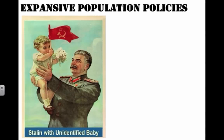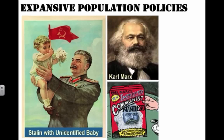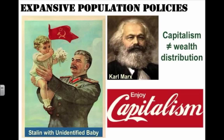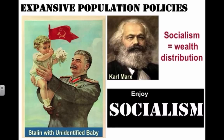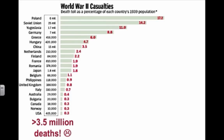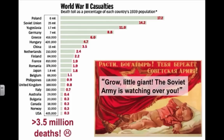Turning to expansive population policies, we must mention the Soviet Union, especially in the years following World War II. The Soviet Union followed closely the philosophies of Karl Marx, author of The Communist Manifesto and Das Kapital. Marx believed capitalism created unequal distribution of wealth and that there was enough food for everyone if the haves would share with the have-nots. Coupled with the reality of post-WWII Soviet Union — having lost more than 14% of their population, over 3.5 million deaths — Stalin and other communist officials set out to massively expand their population and national power through military strength and industrialization.